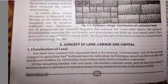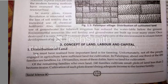Unfortunately, not all the people engaged in agriculture have sufficient land for cultivation. There are lots of people but not all are engaged in agriculture. In Palampur, about one third of the 450 families are landless.